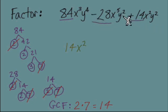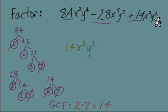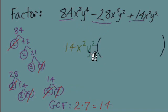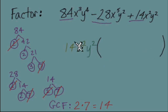Same approach for the y's: find the smallest exponent. The middle and last terms both have y², so that's the maximum number of y's we can take. We get y² in the GCF. So the GCF from all three terms is 14x²y².